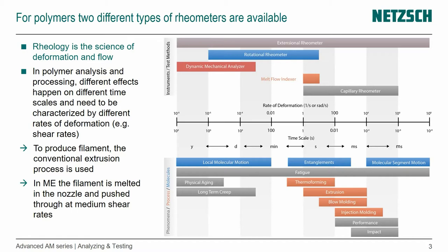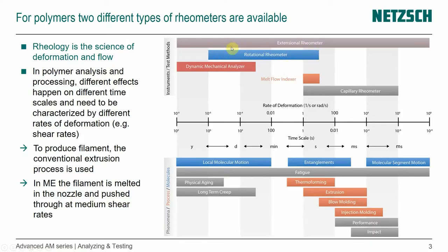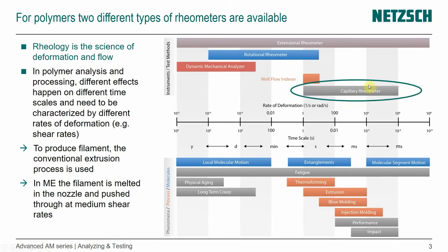Rheology is the science of deformation and flow. And in polymer analysis and processing, different effects happen on different timescales and need to be characterized by different rates of deformation. When we talked about polymer powder bed fusion, we were mostly focusing on rotational rheometers because we were interested in molecular motion and entanglements. When we think of extrusion, regardless if it's the filament extrusion or the material extrusion 3D printing process, we extrude material through a nozzle, we push it under pressure, and we have higher shear rates. So for that, the capillary rheometer is really interesting. And that is more related to the actual production process, for example, extrusion.